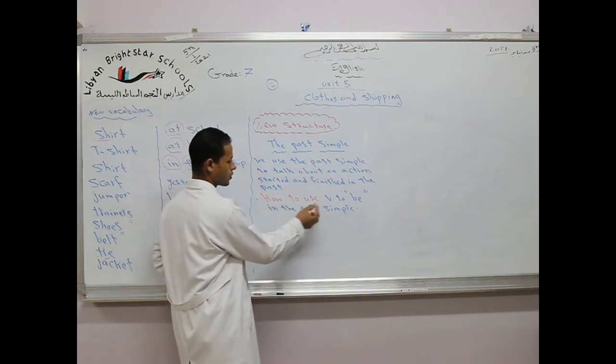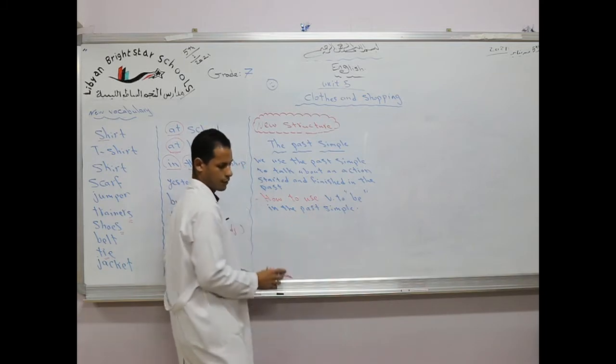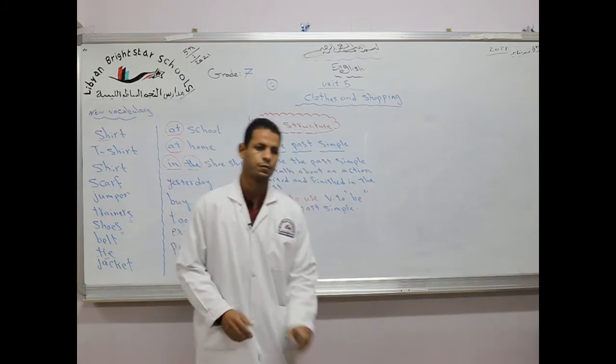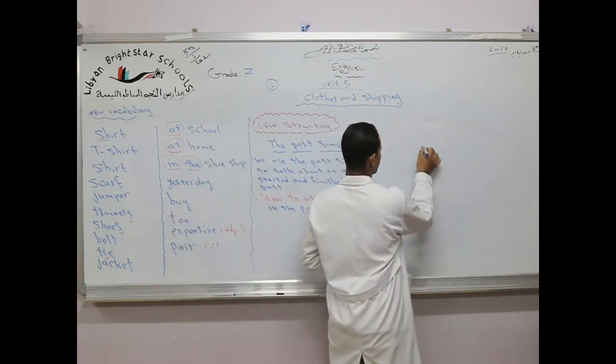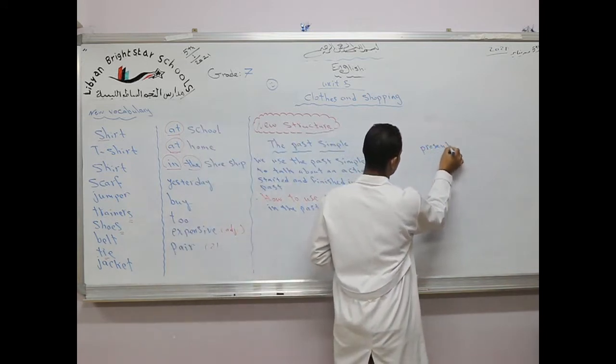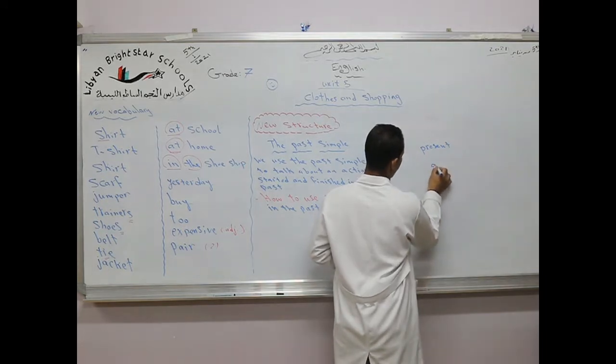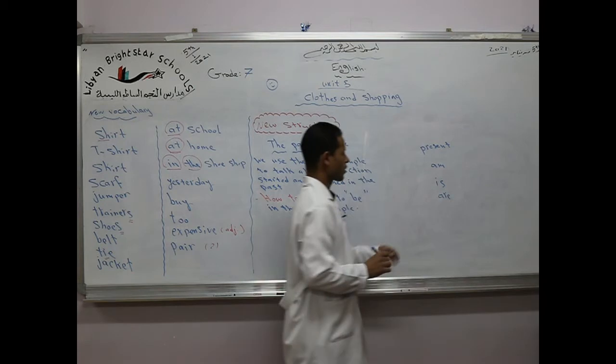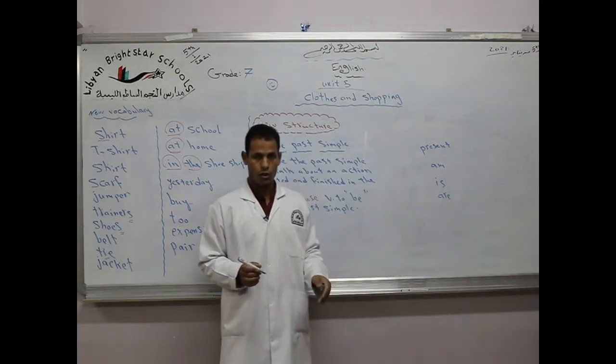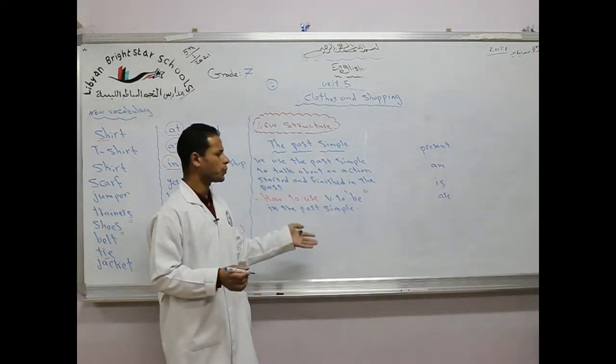How to use verb to be in the past simple? As we know, verb to be in the present: am, is, are. That's about the present. Today we will talk about verb to be in the past.